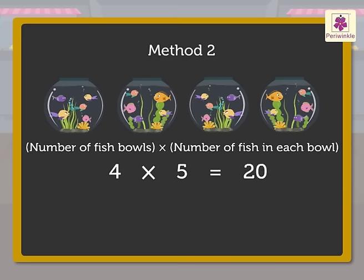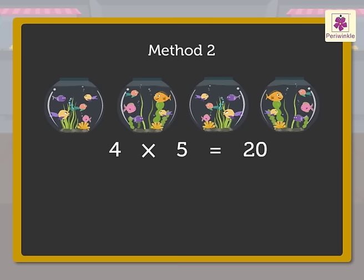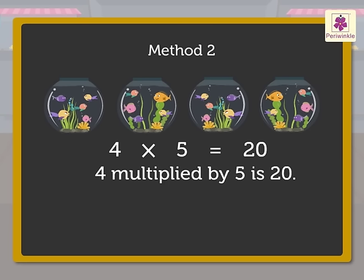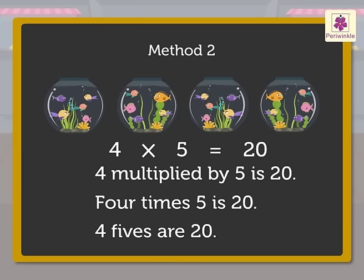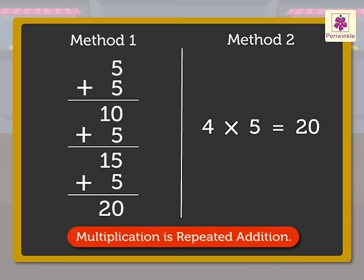Thus, there are 20 fish in all. It can be read as 4 multiplied by 5 is 20. When we compare both methods, we can see that multiplication is repeated addition.